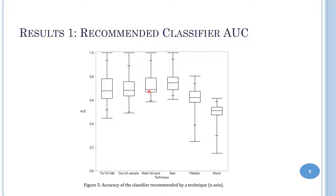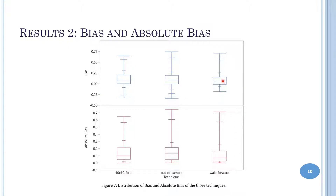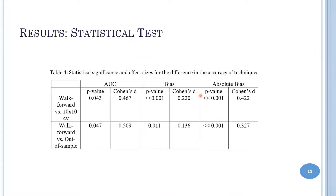The results show that work forward has the highest AUC — it recommends classifiers with the highest AUC compared to out-of-sample bootstrap and ten-times-ten cross-validation. It is worse than the best baseline technique but better than the median, so it is pretty good with room for improvement. Regarding bias and absolute bias, work forward has the smallest distribution — it is stable and provides the lowest bias and absolute bias. A statistical test confirms work forward is statistically significantly better in AUC, bias, and absolute bias versus both alternatives.